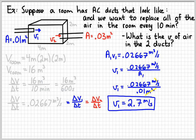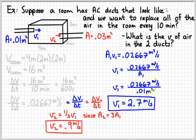Now we could do something very similar, actually the exact same thing, to figure out V2. Or we can realize that it's going to be a third of V1, since the area of the second duct is equal to three times the area of the first duct. So we could save ourselves a little bit of work just by doing a little bit of proportional reasoning there.